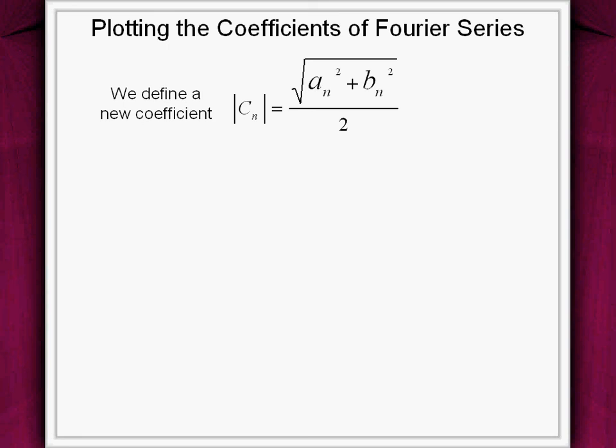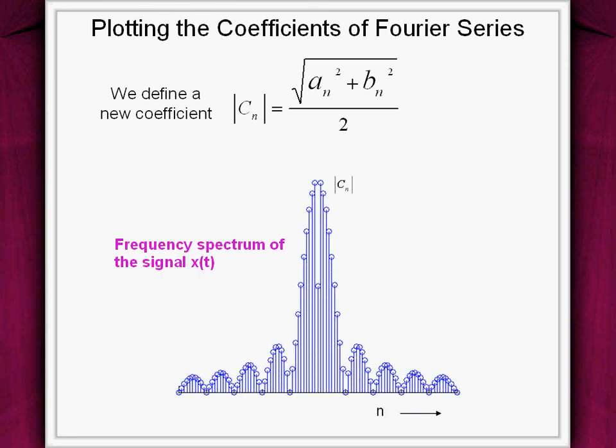Substituting the values of An and Bn, the plot is as shown below. This frequency spectrum tells us how much energy the signal has at any particular harmonic.